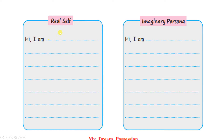For the real self, write down your name, which class you are in, your likes and dislikes, your parents and relatives, etc. For the imaginary person, write whatever you want to be. What you are now is reality, but if given a choice, what would you select? That is the imaginary person you have to write down.